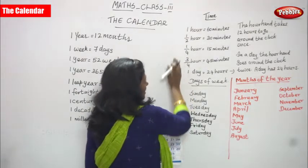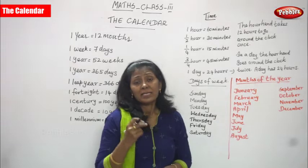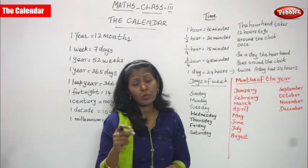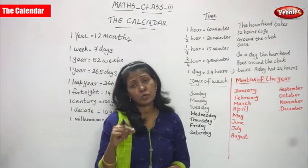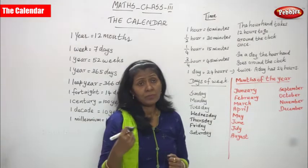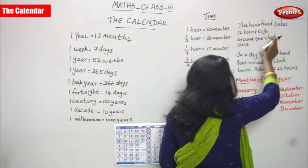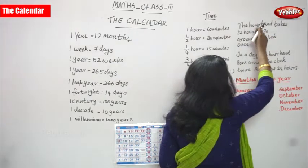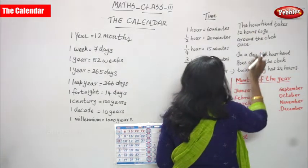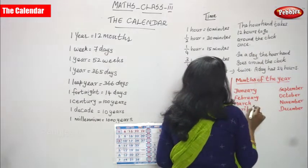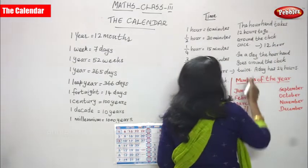The clock has two hands: one is the hour hand and the other is the minute hand. The hour hand is always the short hand and the minute hand is always the long hand. The hour hand takes 12 hours to go around the clock once.